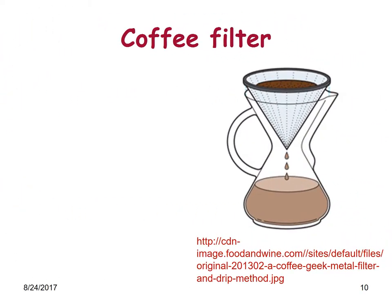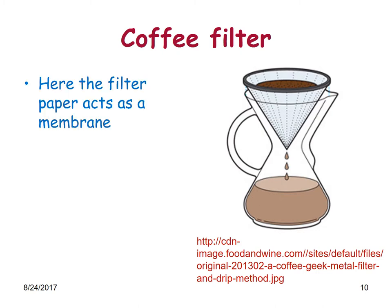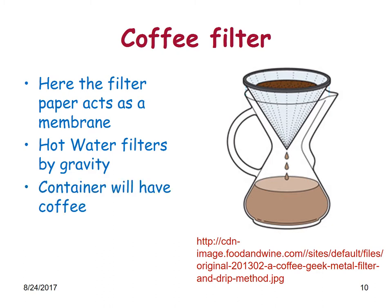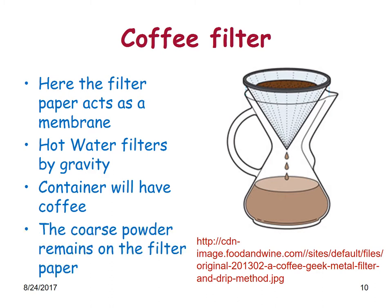The kidney nephrons could be compared to a coffee filter. The filter paper acts as a membrane, and the hot water filters through by a force called gravity — therefore the container will have coffee while the coarse powder remains on the filter paper. This is almost the same principle with which nephrons in the kidneys work, but the forces are different — it is not by gravity.